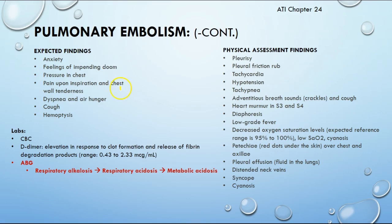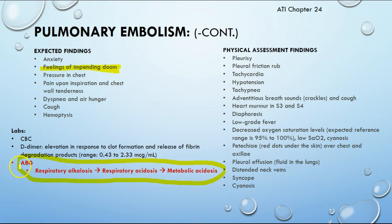Expected findings of PE include a feeling of impending doom, chest pressure, anxiety, pain upon breathing, tenderness, difficulty breathing or gasping for air, cough, and hemoptysis. Labs include CBC and D-dimer — elevations indicate clot formation; the range is 0.43 to 2.33. As a patient decompensates, they first present in respiratory alkalosis (rapid breathing blows off CO2), which progresses to respiratory acidosis and ultimately metabolic acidosis.